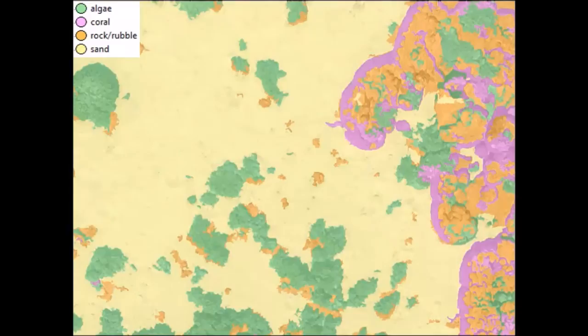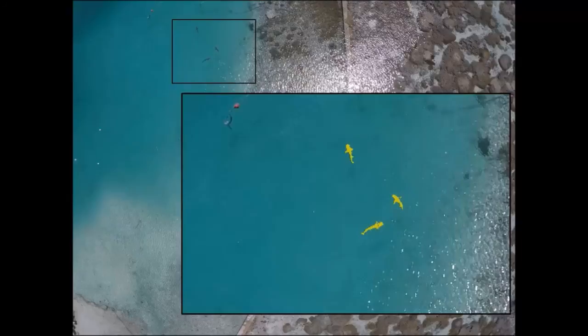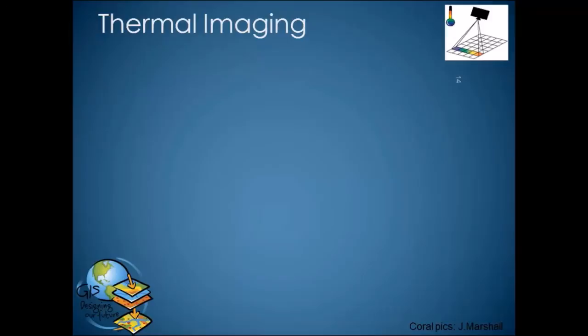In a bit more detail, we like to create maps from this — zooming into the image and using an automatic classification tool to identify exactly where the algae, coral, rock, rubble, and sand are. We do this in an automated way because it takes too long to do manually. It's also interesting that in the channel area, if you zoom in, we can pull out individual sharks — again using an automated technique.